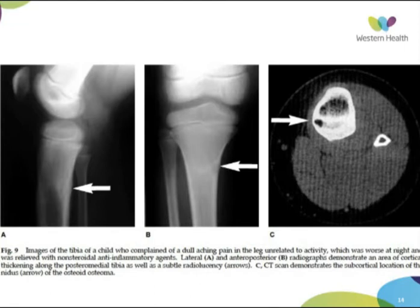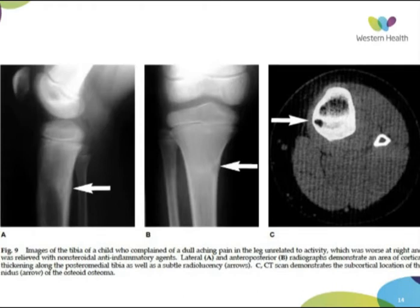An osteoblastoma is basically thought to be an extension of the osteoid osteoma, but it's a larger lesion — greater than 2 cm. It's not self-limiting. There is pain, and often neurological involvement because it usually affects the posterior spinal segments due to its mass effect. The x-ray appearance is much more destructive and permeative — quite diffuse throughout. Management is open curettage and marginal excision.